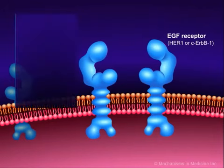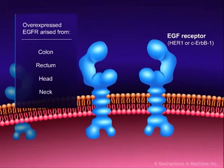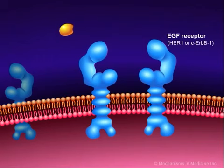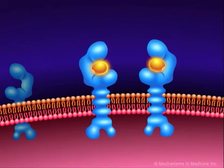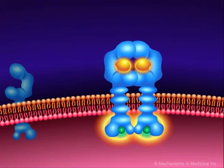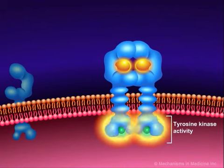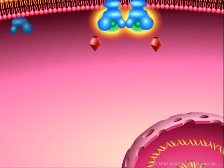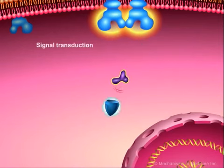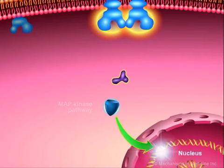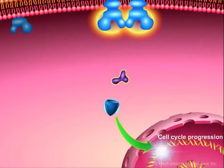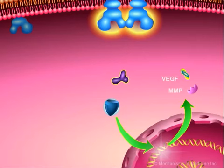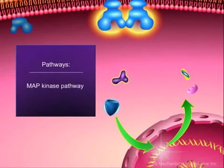EGFR is overexpressed in tumors arising from the colon, rectum, and head and neck, to name a few. When a specific ligand binds to its receptor, this leads to changes in the receptor that transmit a specific signal into the cell. For example, the receptor tyrosine kinase is activated and initiates a signaling pathway specific to that receptor — this phenomenon is called signal transduction. One of the major cascades implicated in cancers is the RAS-RAF mitogen-activated protein, or MAP, kinase pathway.